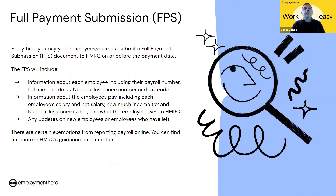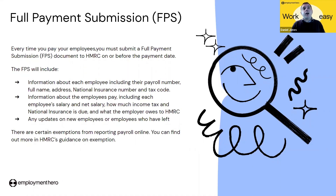The way you communicate with HMRC is through what we call the Full Payment Summary, also known as the FPS. Every time you pay your employees, you must submit the FPS to HMRC on or before the payment date. The FPS includes typical information such as the employee's name and address, national insurance number, and tax code used within that pay run, as well as information about the employee's pay including gross and net salary, how much income tax and national insurance are due, and what the employer owes to HMRC. Any updates regarding new employees or employees who have left are also transmitted through the FPS.